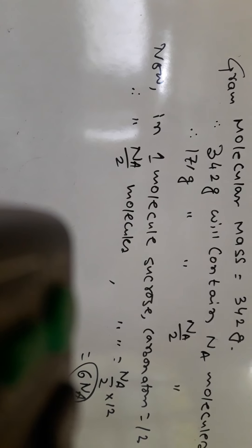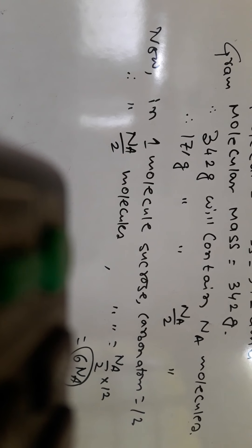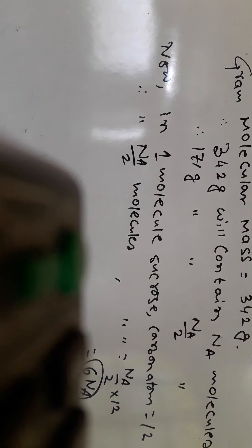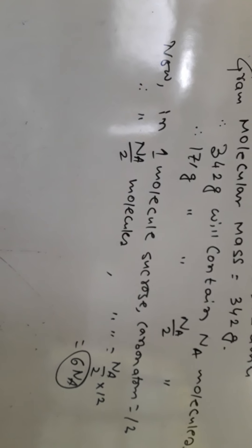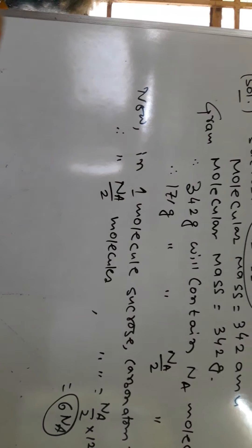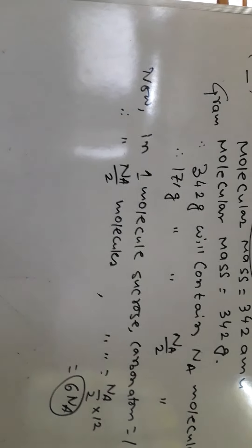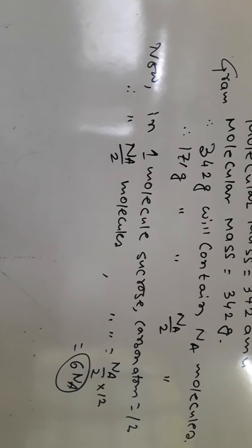So 342 grams will contain NA molecules. In one molecule of sucrose, carbon atoms = 12. Therefore in NA/2 molecules, the number of carbon atoms = NA/2 × 12 = 6NA. The answer is 6NA. This is one kind of problem — try to look at it carefully.